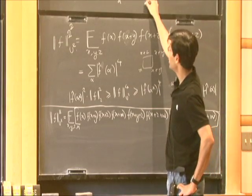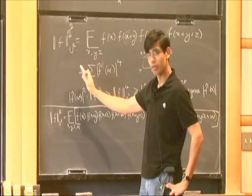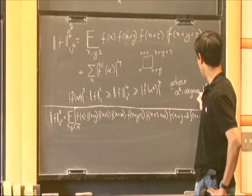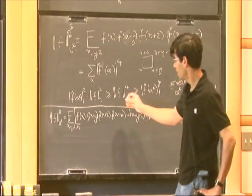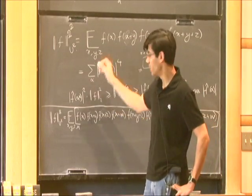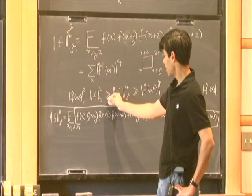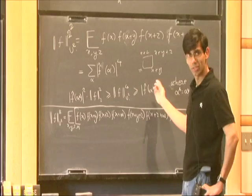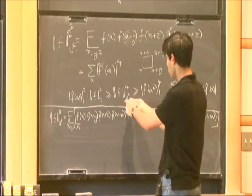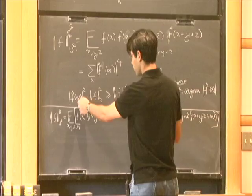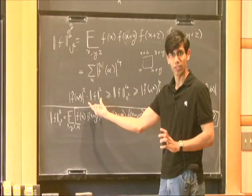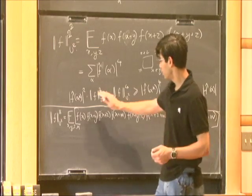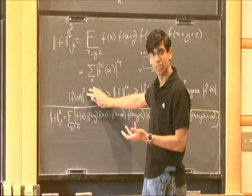From that expression, you can take out the maximum Fourier coefficient — alpha-star is the alpha which maximizes the Fourier coefficient — times the sum of squares, which is the norm squared. This gives an upper bound on the fourth power of the U2 norm, which is in turn an upper bound on the fourth power of the largest Fourier coefficient. So the U2 norm measures the largest Fourier coefficient when the L2 norm of the function is bounded — say, equal to one — and it's within a quadratic factor of the largest Fourier coefficient.